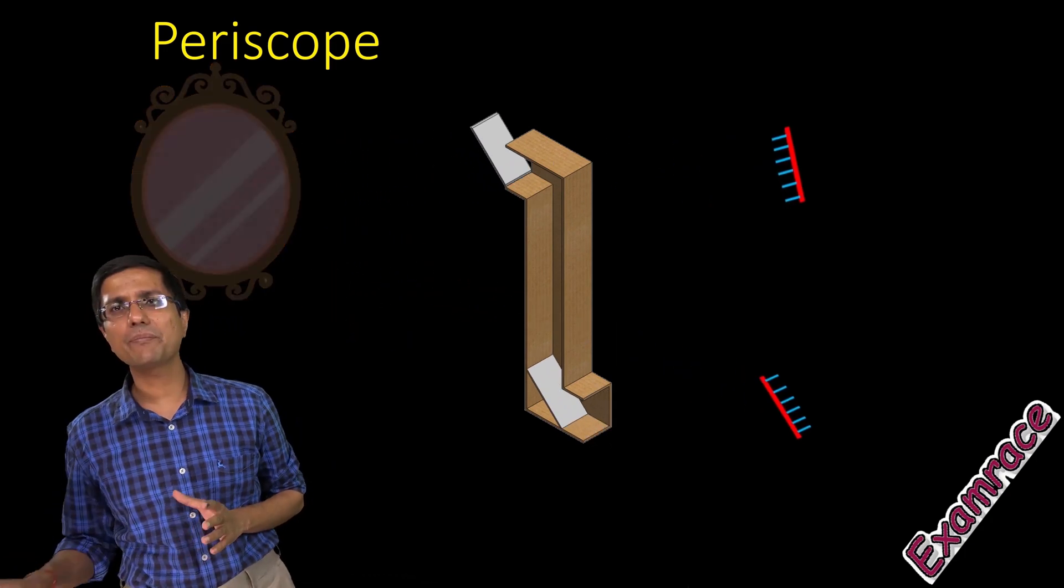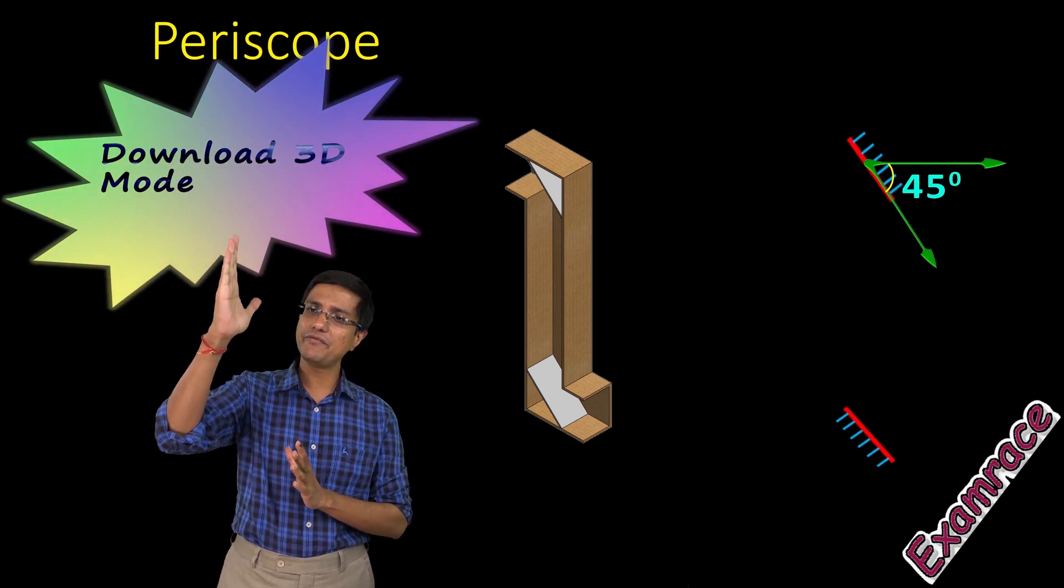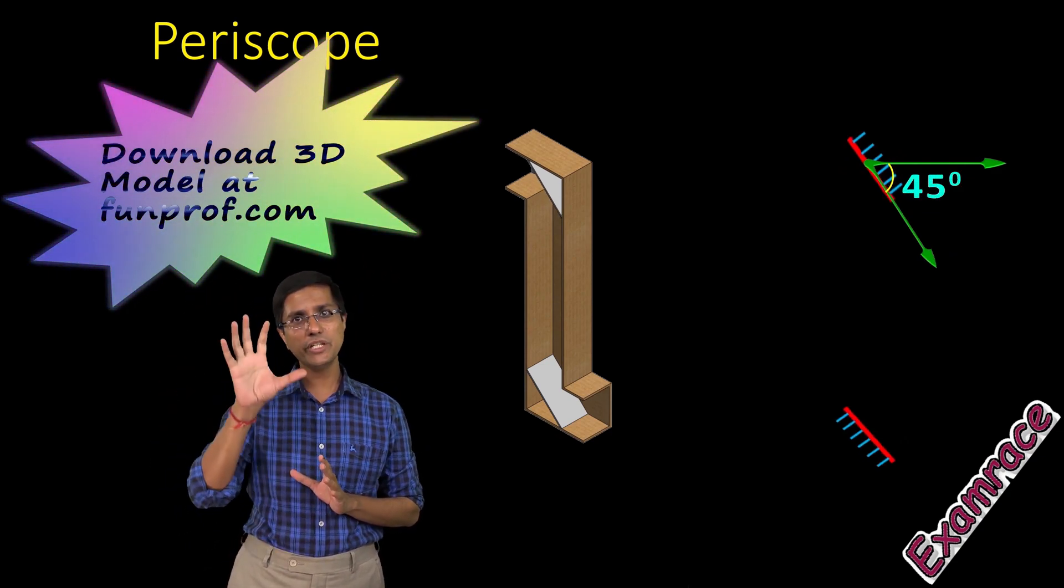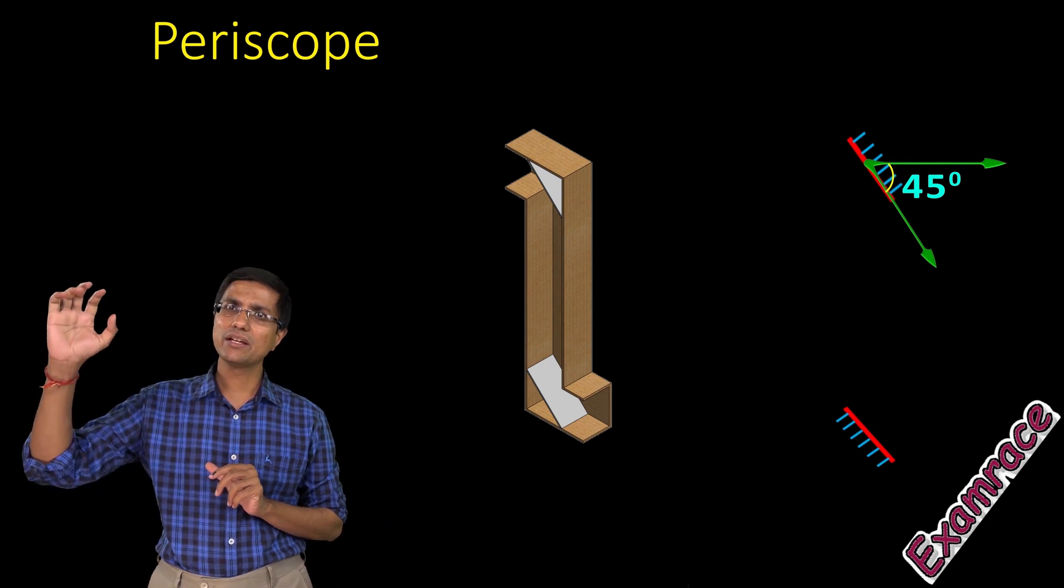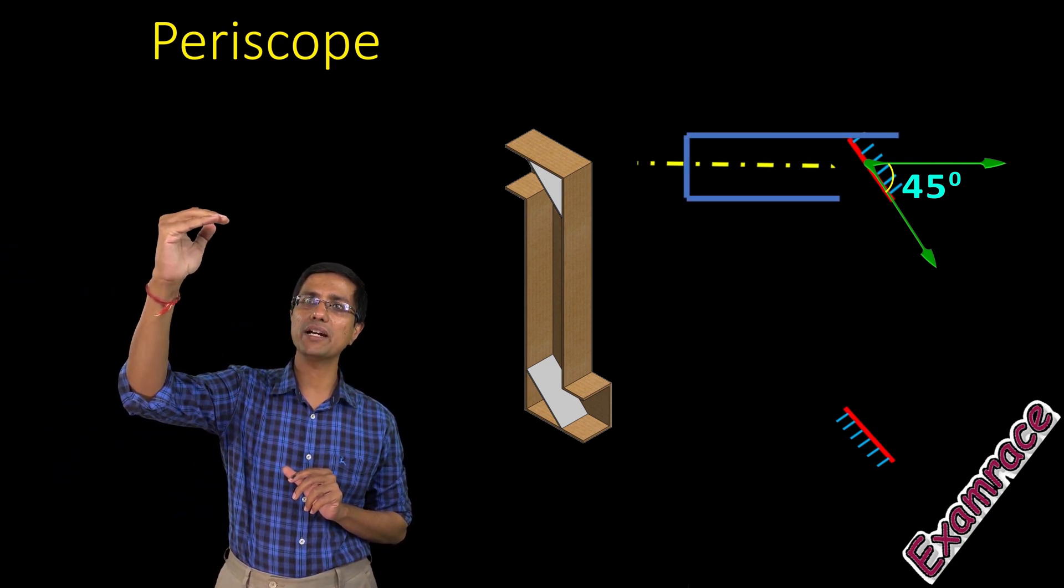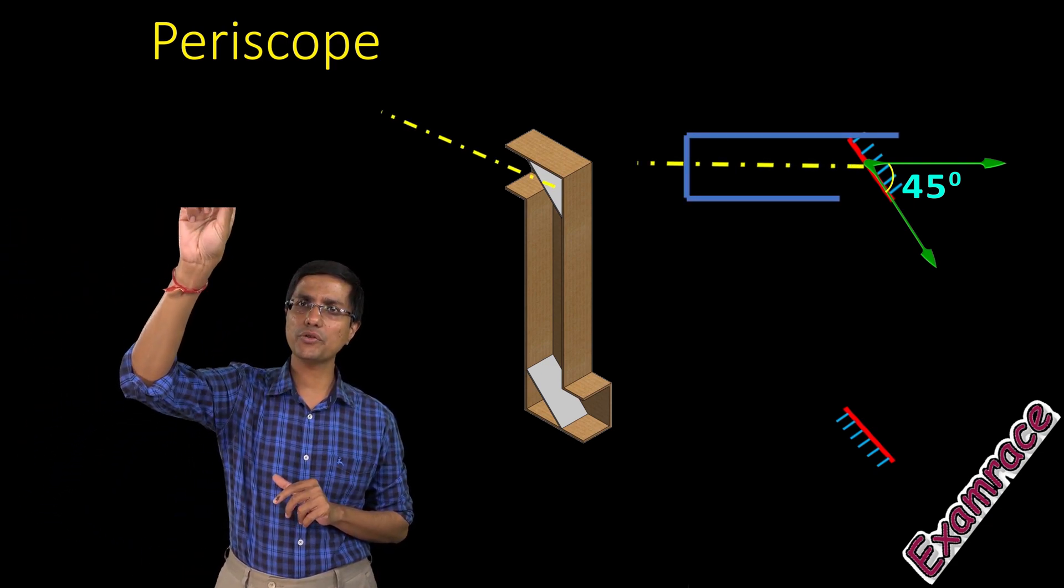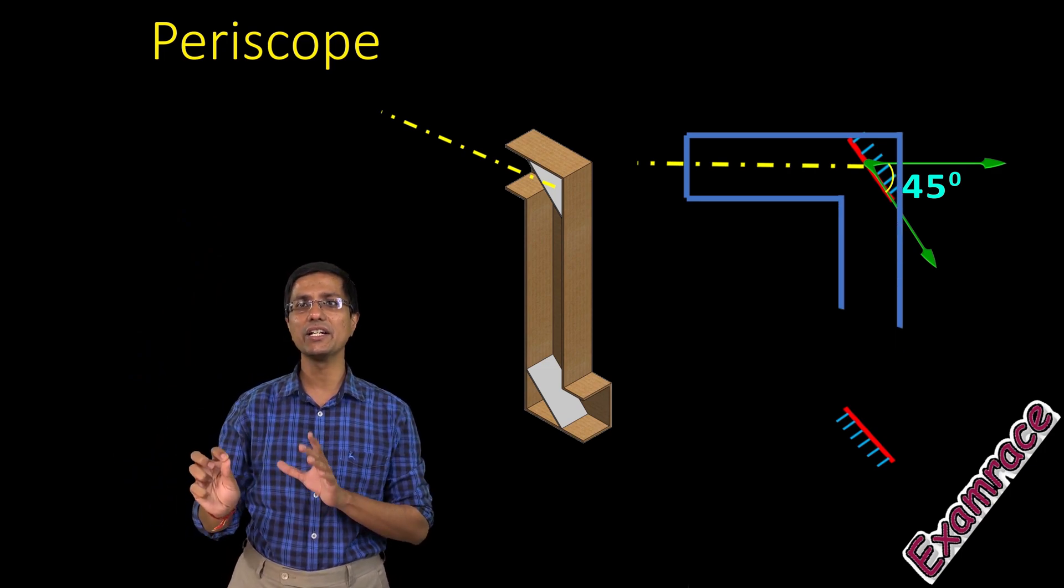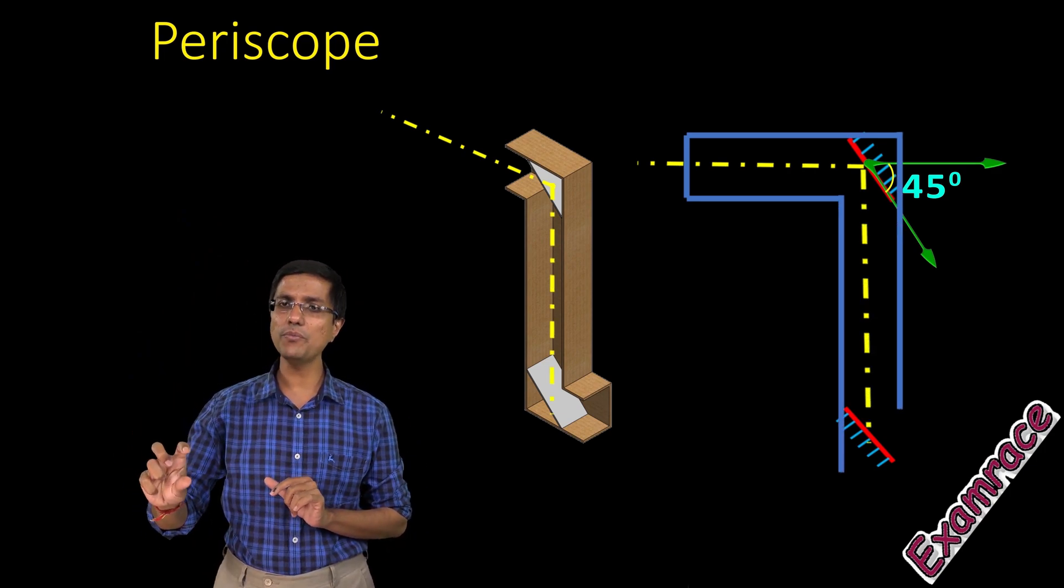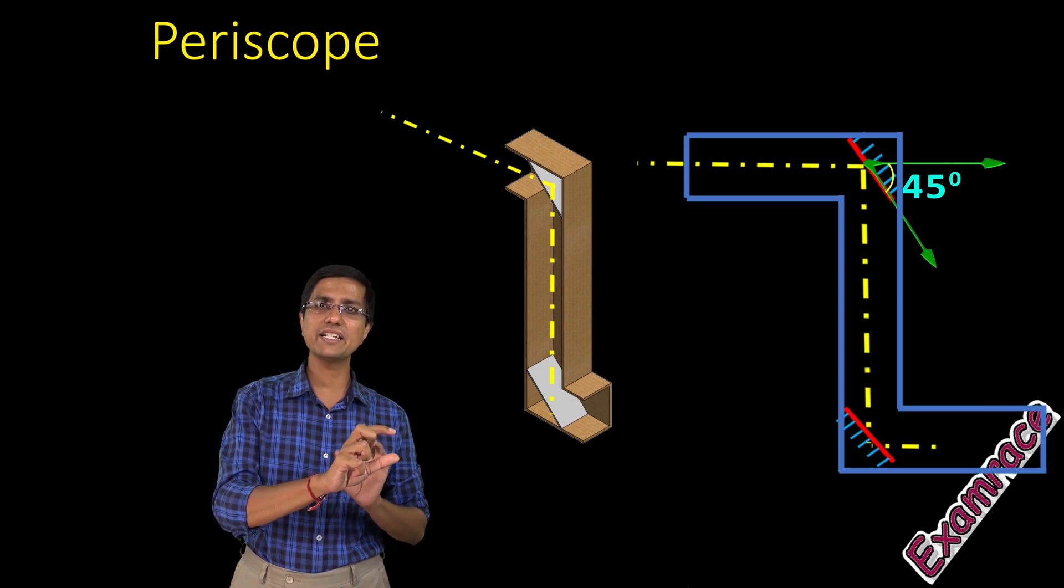There are two mirrors which are placed at a 45-degree angle facing each other inside a tube. The way they are arranged is the light from the top mirror, when it comes in, is reflected straight to the bottom mirror. From the bottom mirror, the light is reflected straight outside where an observer can see it.